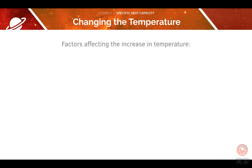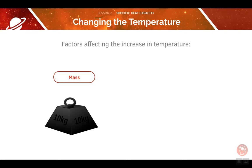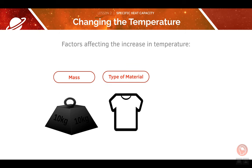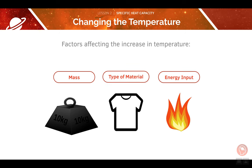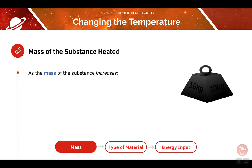When we raise the temperature of a system, different factors will affect the increase in temperature. These include the mass, the type of material, and the energy input. As the mass of a substance increases, the number of particles in the substance will also increase. This means there are a larger number of particles to heat, therefore making it more difficult to heat.